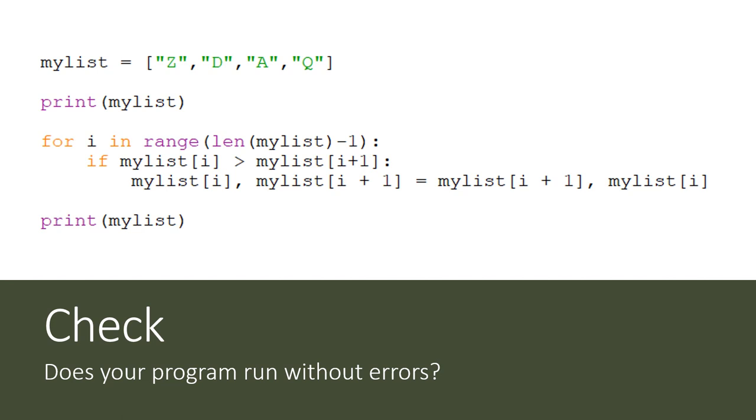For I in range length mylist minus one. I already said that if the value is bigger than the value that follows. Then swap them using the tuple substitution and then print the list out.